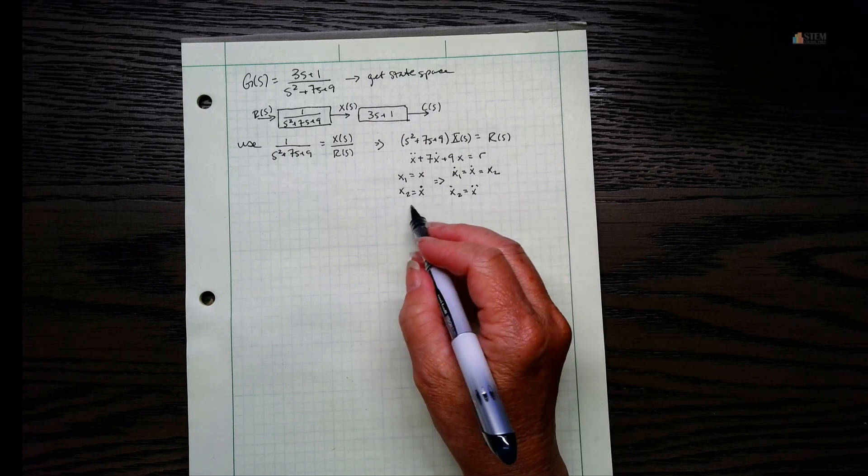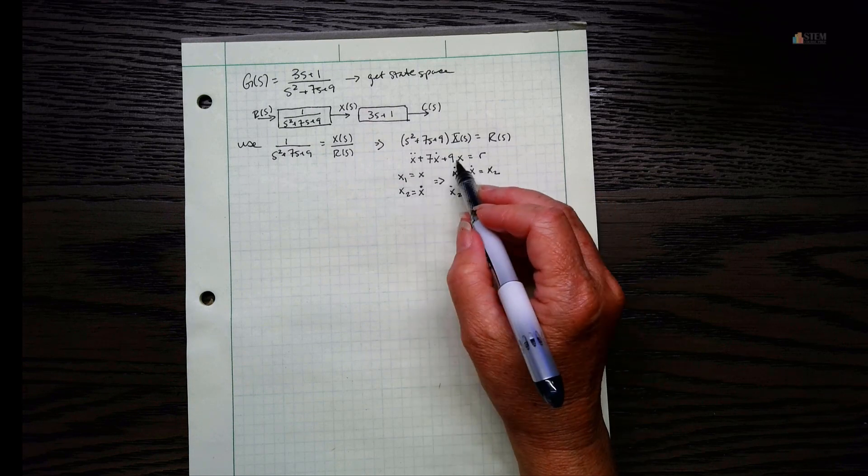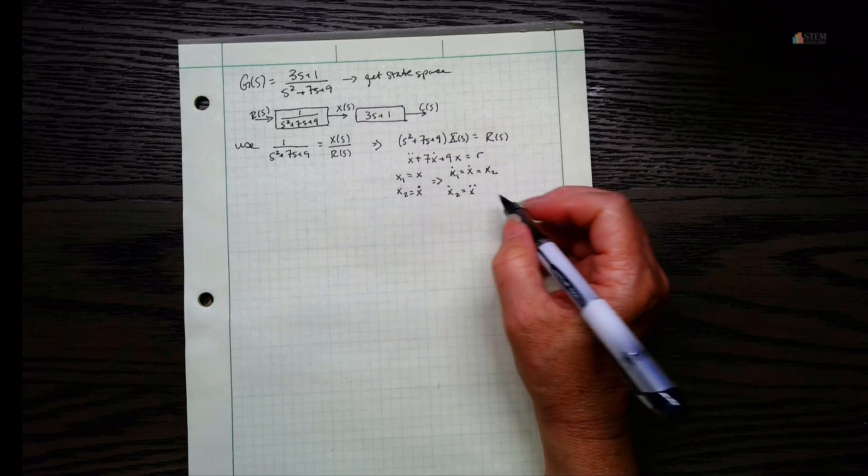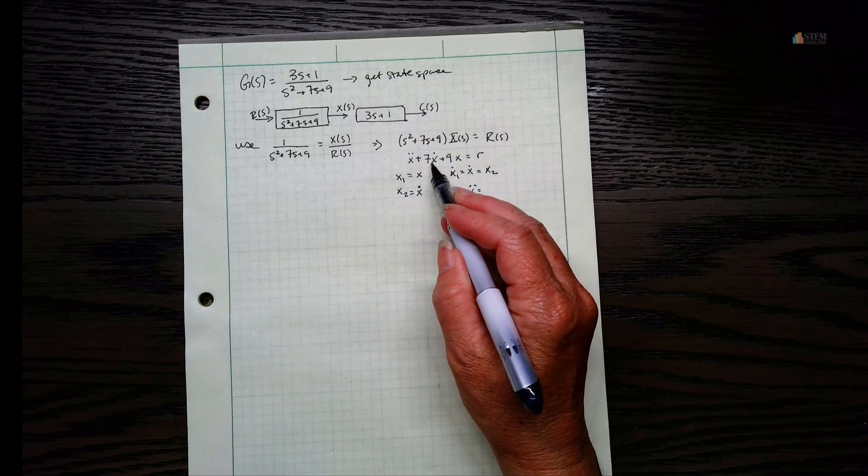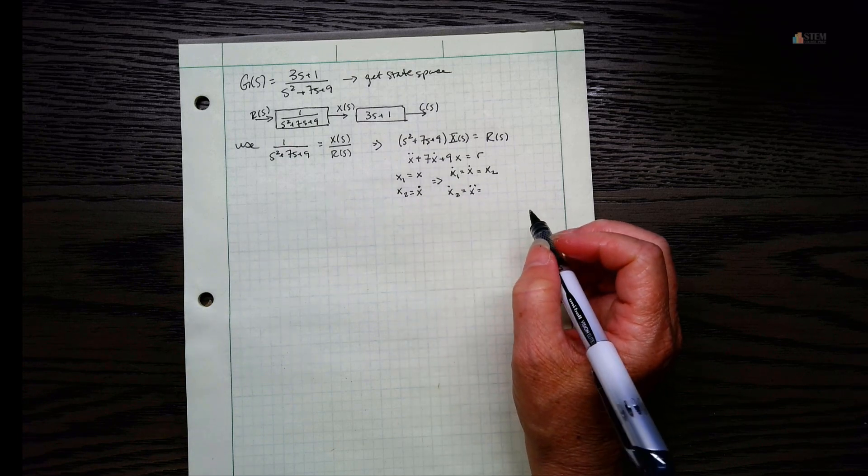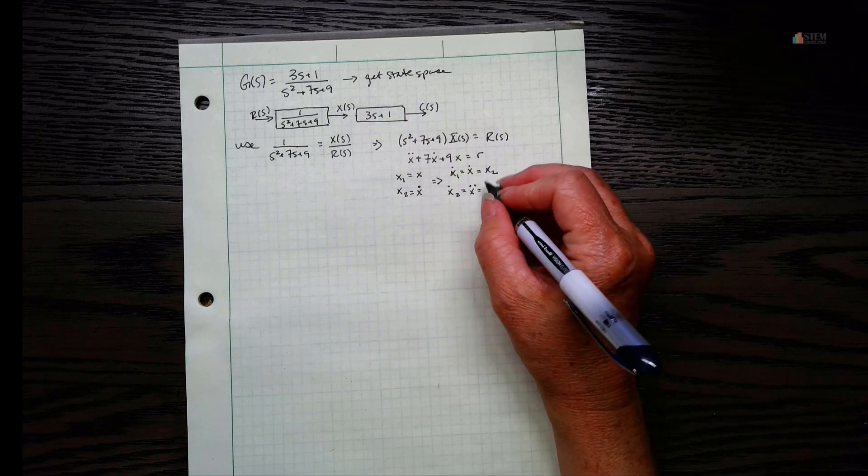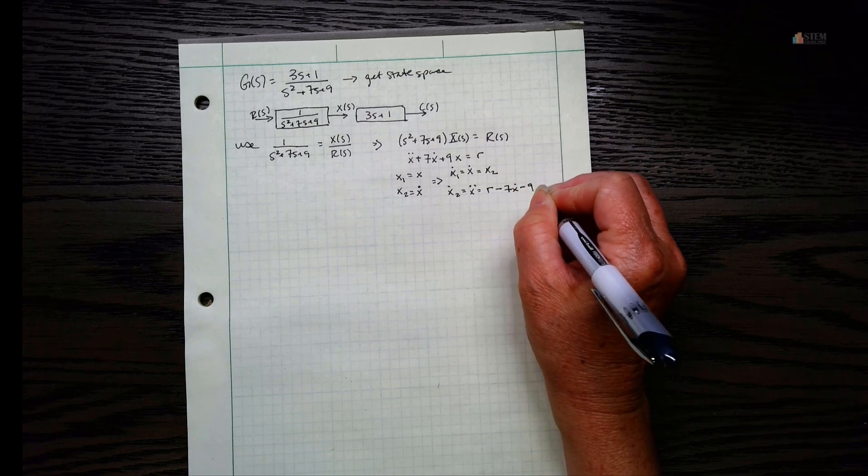So now we've got X double dot. Well, we don't have a variable for that. So what we're going to do is take this equation, solve for the X double dot. That means we're going to take the 7X dot term, move it over, 9X moves over. So the signs there become negative. So we'll end up having our R minus 7X dot minus 9X.